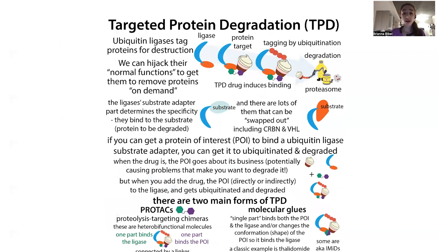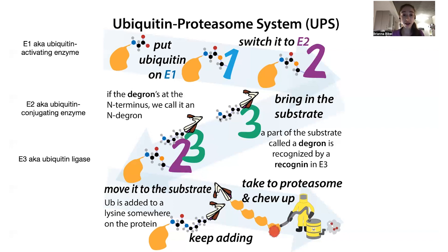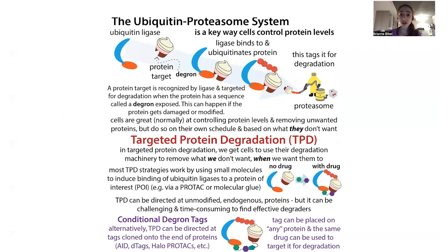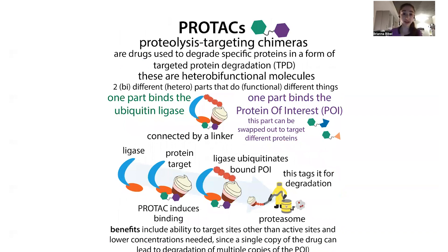In the case of the AID technology, we actually have to add in an E3 ligase because it uses a plant one that we don't have. But for the most part, we're hijacking the cell's own system, since cells ubiquitinate and degrade proteins on their own schedule. We want to override that schedule and get rid of the protein ourselves to see what it does — and we can do this using targeted protein degradation.